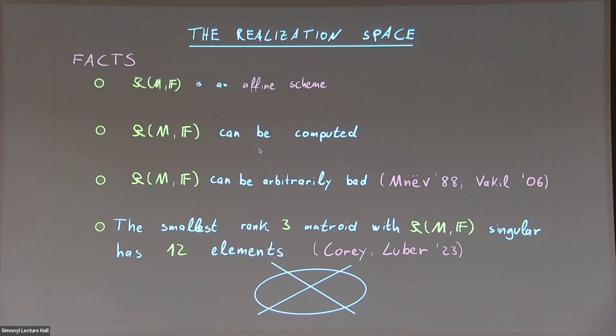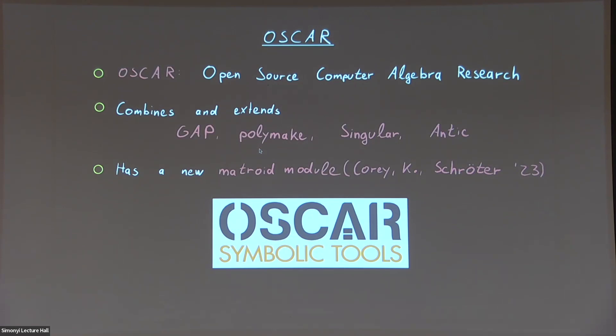So now, I want to come back to the point that it can be computed. That's not just a theoretical statement, but I want to show computations of how to compute it. And these computations are performed in OSCAR. OSCAR is a new computer algebra system currently developed. It stands for Open Source Computer Algebra Research, and it aims at combining existing packages, such as GAP, Polymake, Singular, and Antic for group theory, discrete geometry, commutative algebra, and number theory. What is Antic? Antic, I think it stands for algorithmic number theory, and IC, I don't know, but I think it is developed for number theory. But this OSCAR thing has a new module for matroids. It was developed by Dan Corey, Benjamin Schroeter, myself, last year. And I want to show some computations in this module pertaining to the realization space of a matroid.